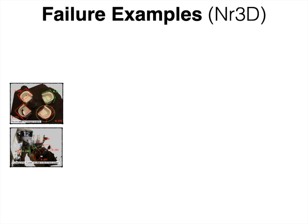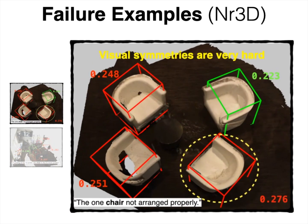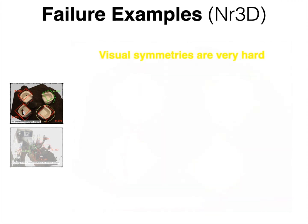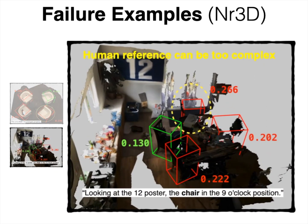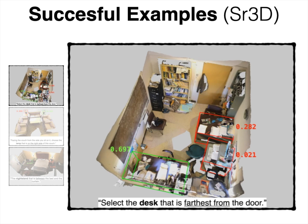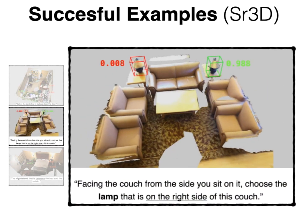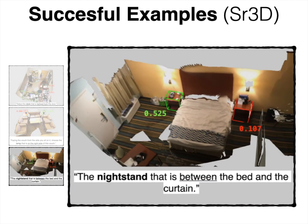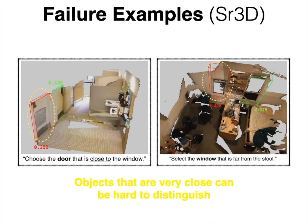We also show two characteristic failure cases. The first example shows a scene with pronounced symmetries, which makes the problem very hard even for humans to describe and solve. The second example shows how complicated human references can be, as in '12 o'clock from the poster.' We also show successful qualitative cases of SR3D in easier contexts. The failing examples in SR3D are mostly associated with objects that are very close in 3D space to the target, making identification more challenging.